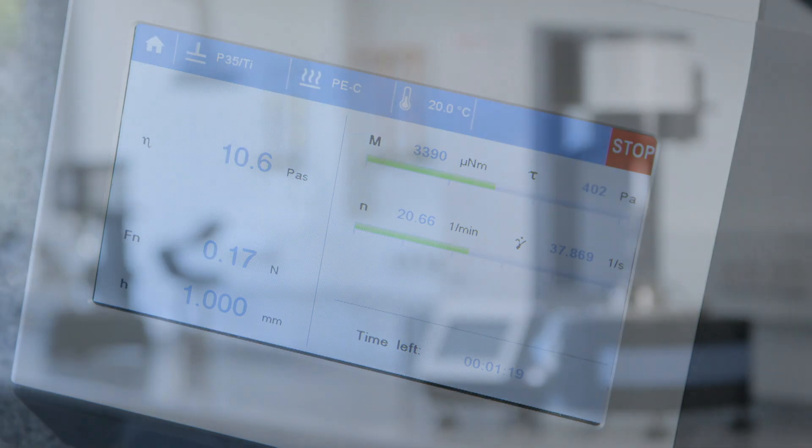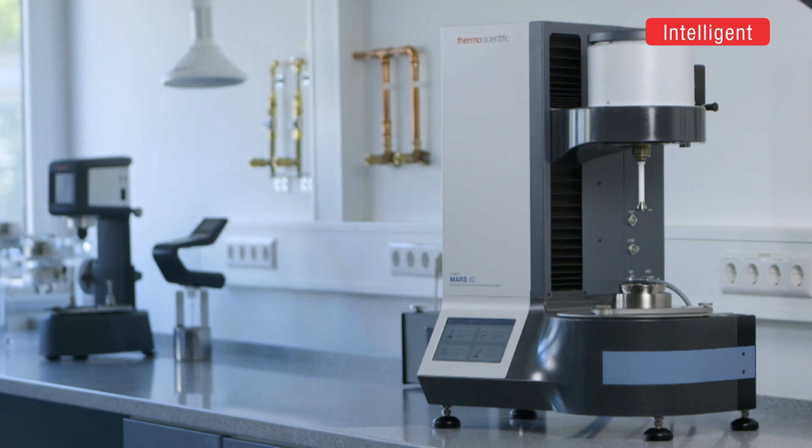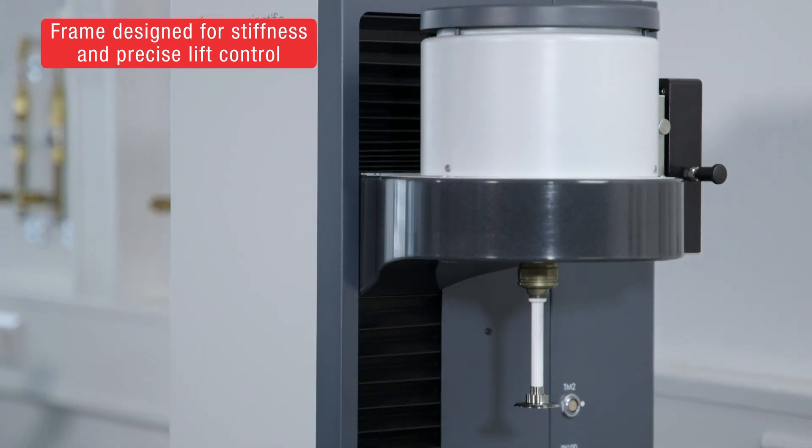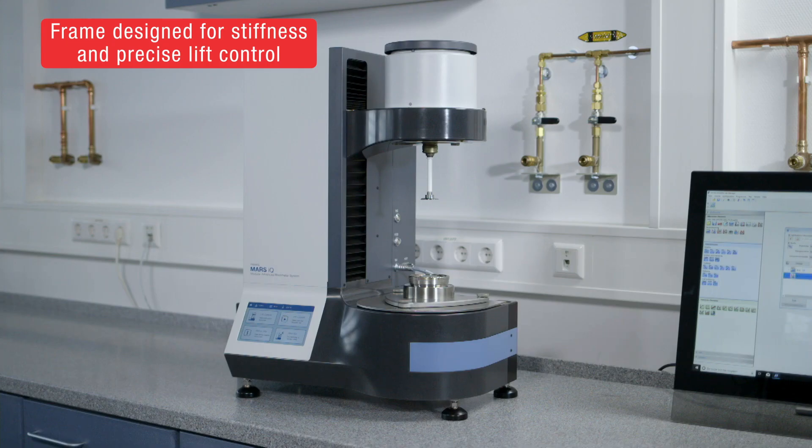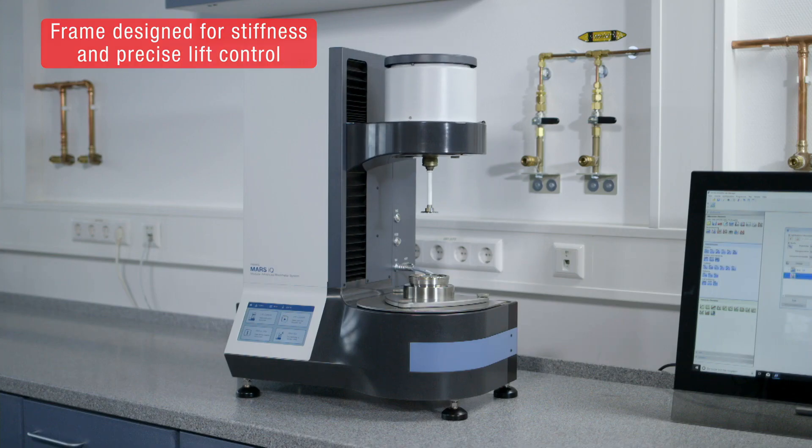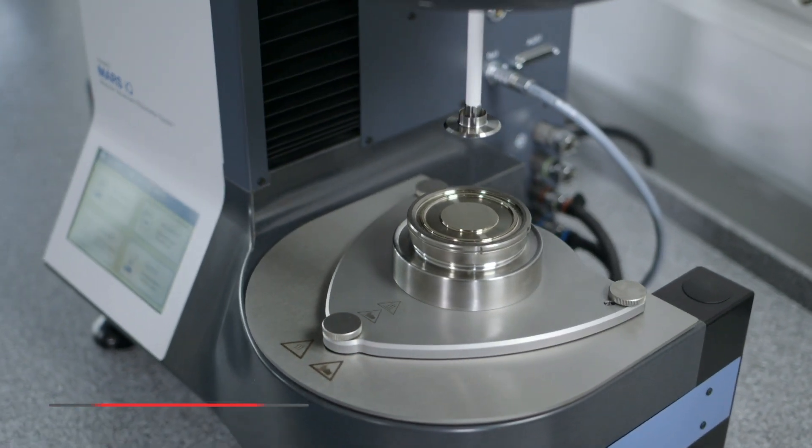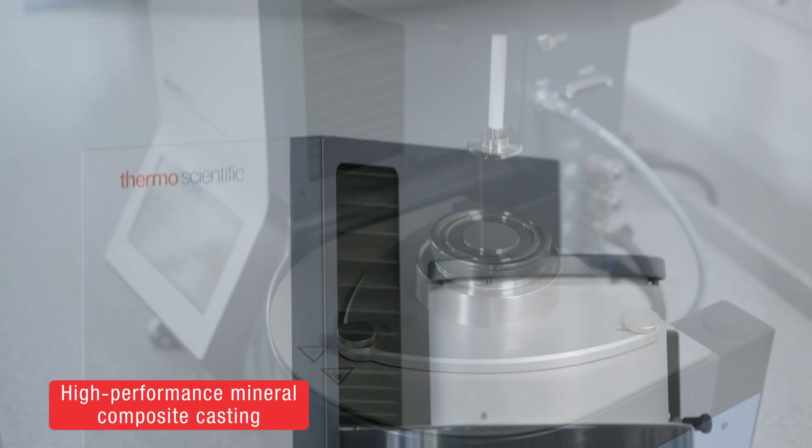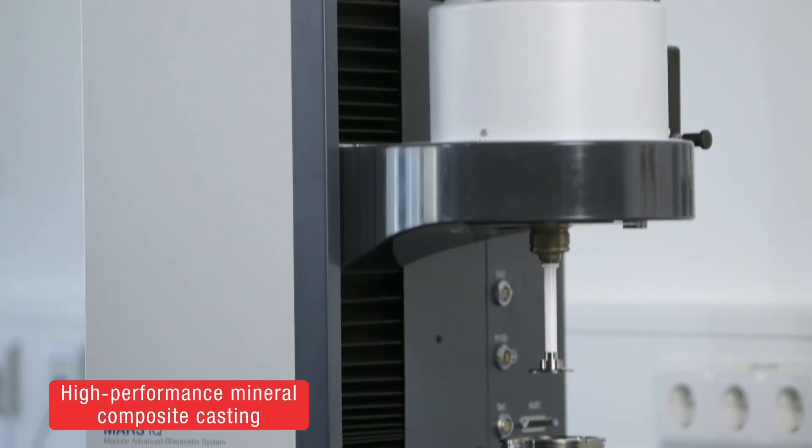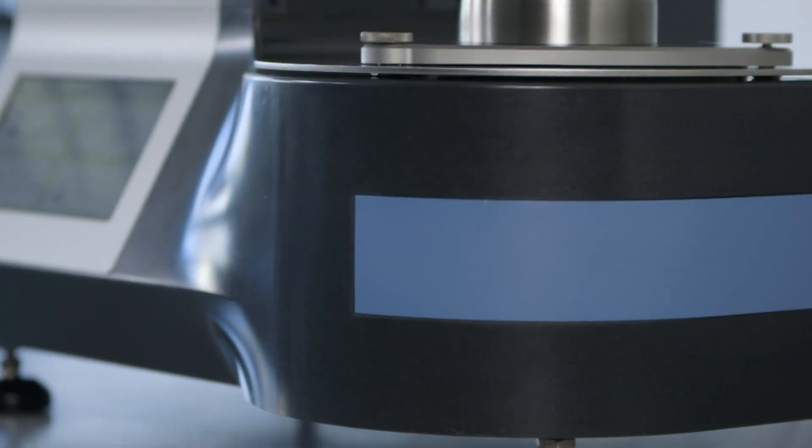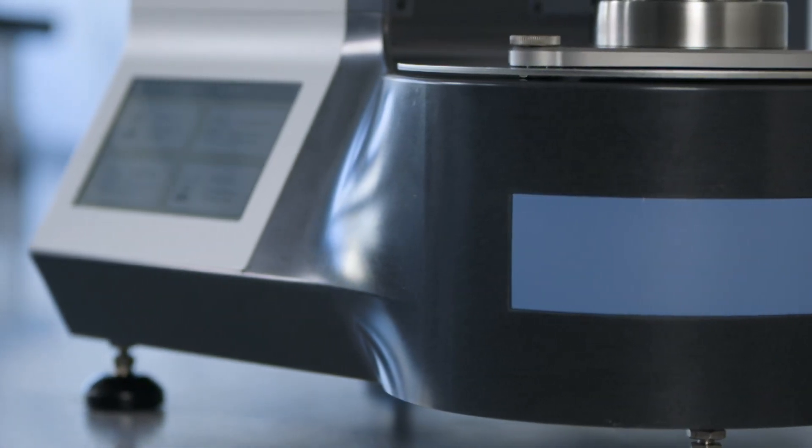The HAAKE MARS iQ Rheometer has an intelligent design making it robust for daily challenges. The instrument's folded H-frame combines greater stiffness and ultra-precise lift control with a wide travel range. The rheometer is made with an innovative high-performance mineral composite casting with exceptional properties such as high vibrational damping, minimal temperature expansion, and maximal chemical resistance.